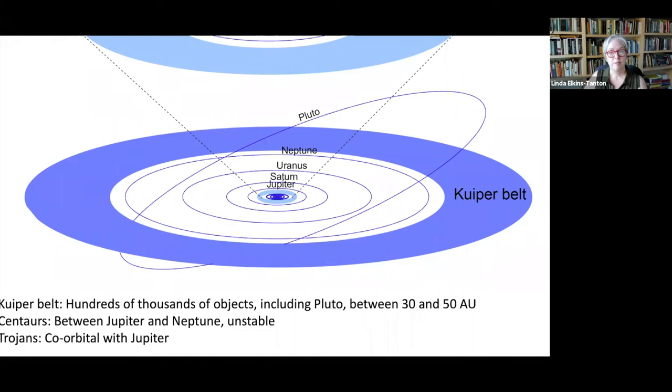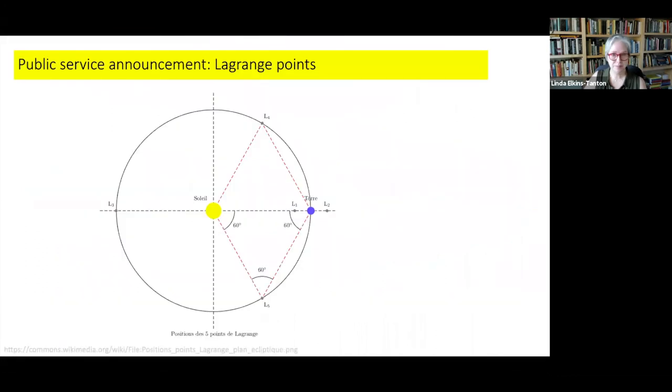But then there are special populations of small worlds that are co-orbital with Jupiter. These are called Trojans and they exist in special stable areas called Lagrange points. So let's talk about Lagrange points. This is a public service announcement on Lagrange points.